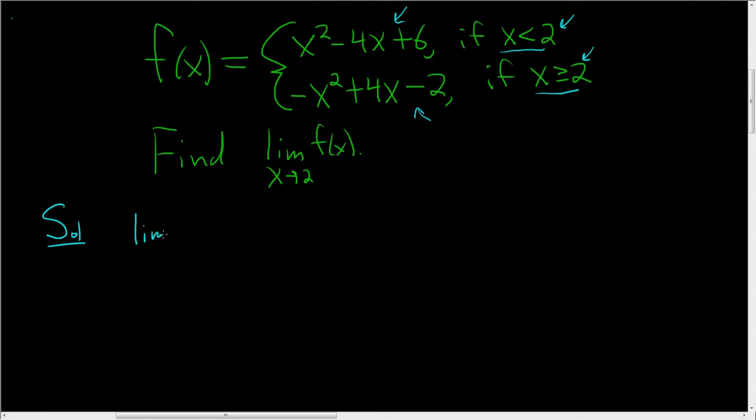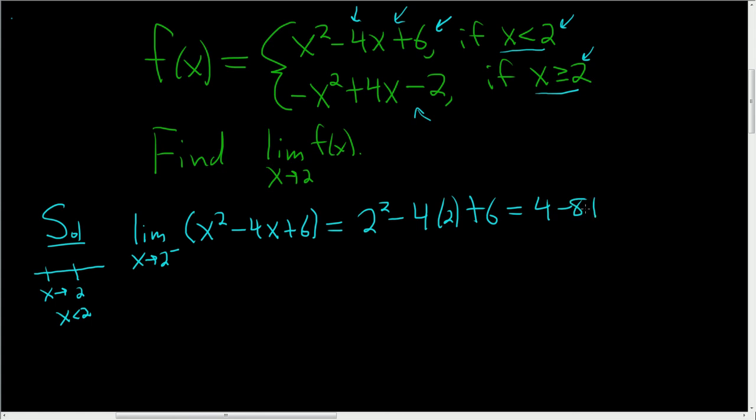So let's look at the limit as x approaches 2 from the left. Here's a little picture: here's 2, we're approaching 2 from the left, so here's x. That means x is less than 2, so we're going to use the first piece right here. So in this case, f(x) is x² - 4x + 6. This is a polynomial, so we can just plug in: we get 2² - 4 times 2 + 6. So this is 4 - 8 + 6, which equals 2.